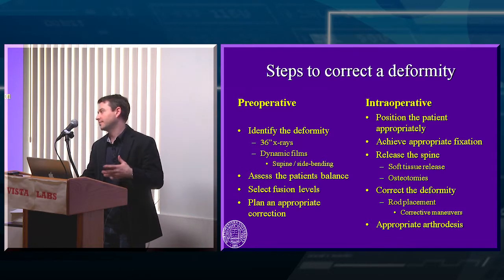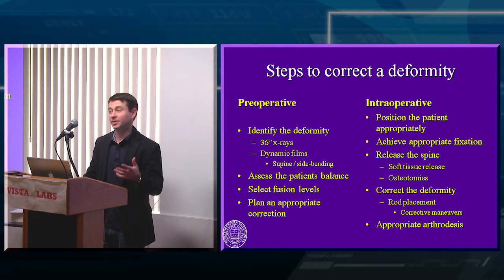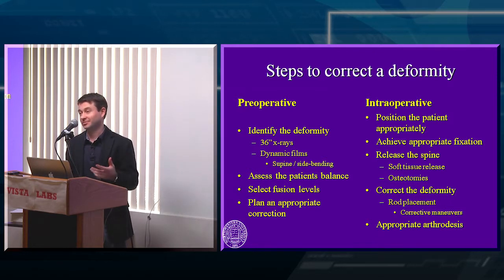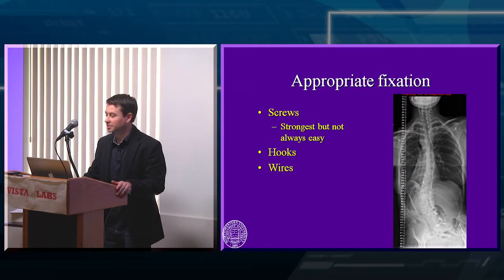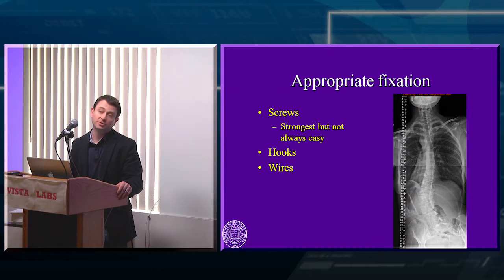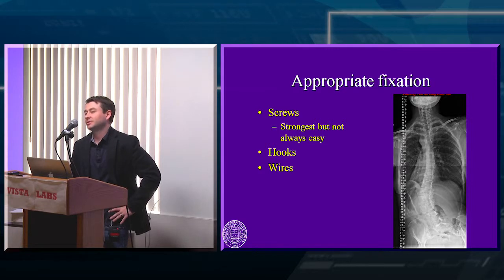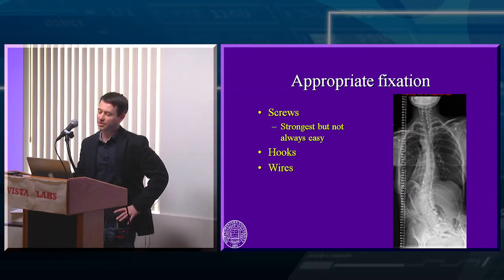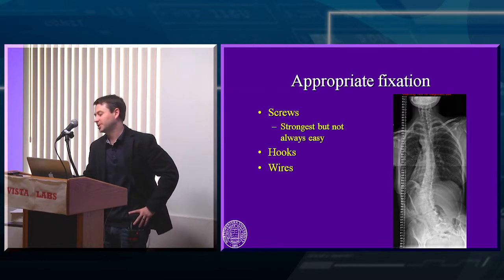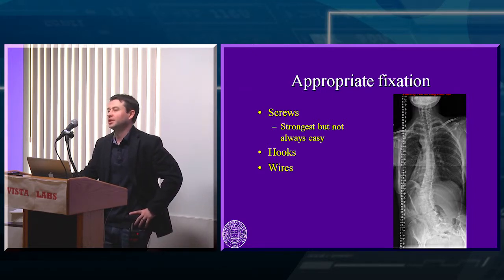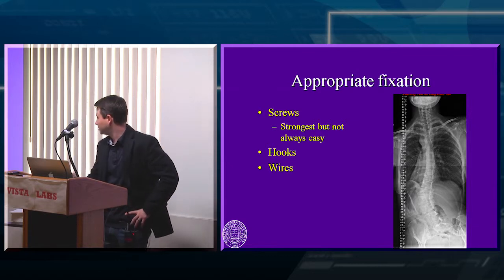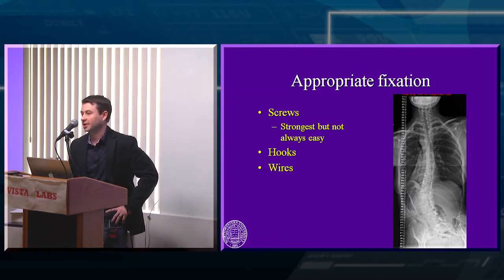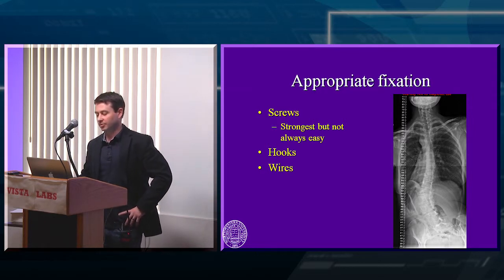When you start talking about correcting the spine, flexibility is a relative term — we can make anything flexible with the right osteotomy. But to do any of these you have to get good fixation. Thoracic pedicle screws can be easy or hard, and in scoliotic patients the pedicles aren't always nicely sized. Here's an adult neuromuscular patient with cerebral palsy who has a highly rotated curve — her spine is nearly touching her iliac crest, significantly malaligned both coronally and sagittally.